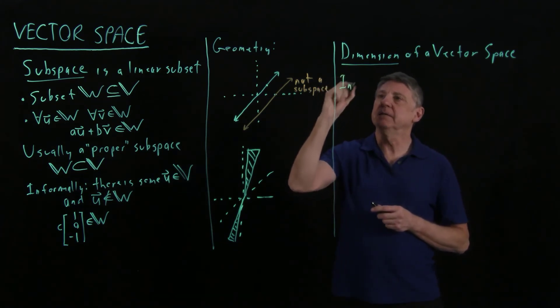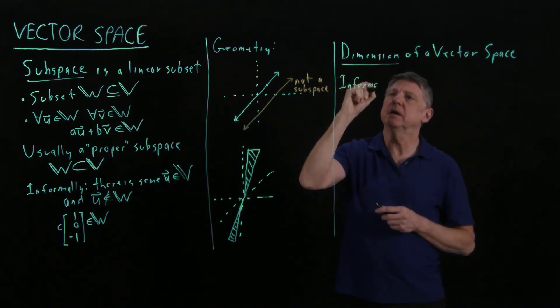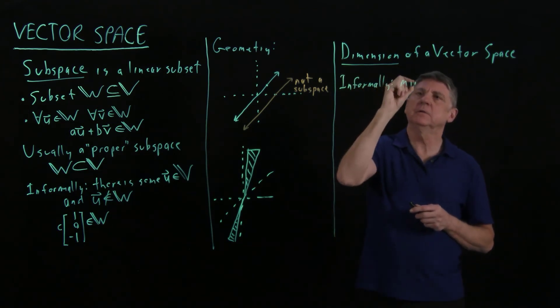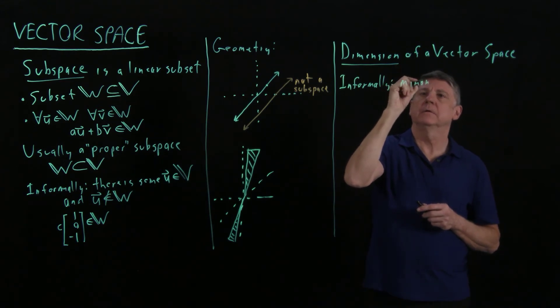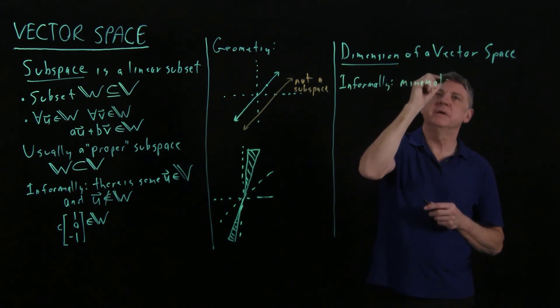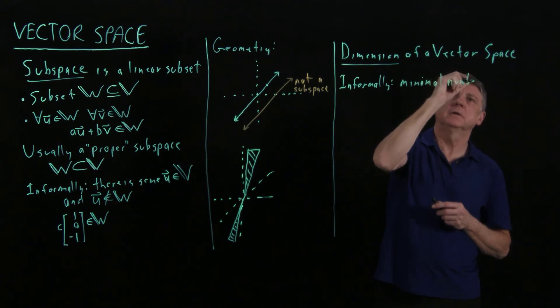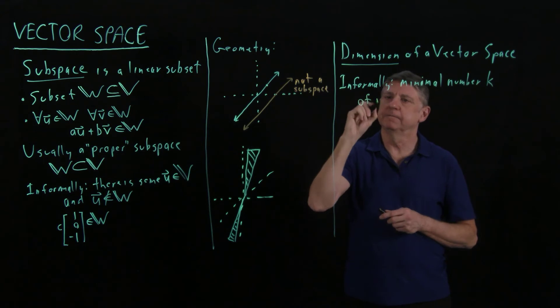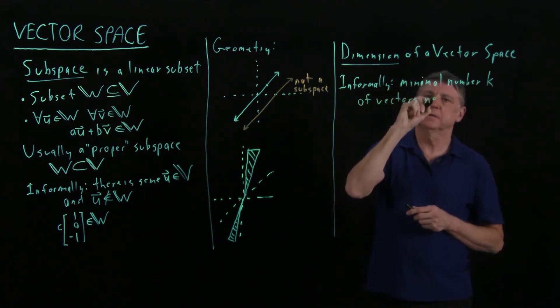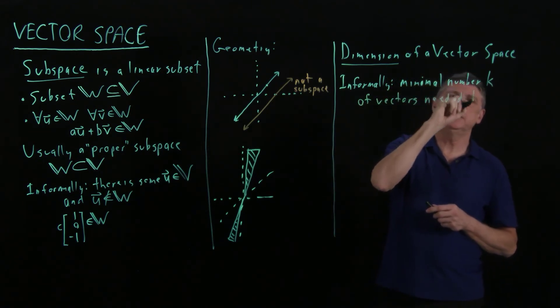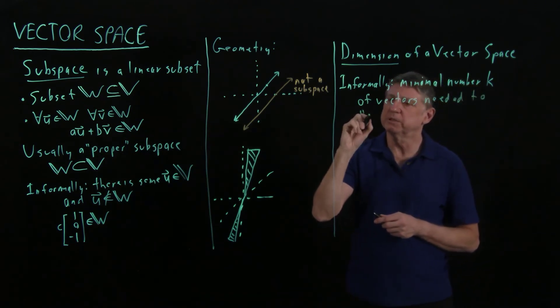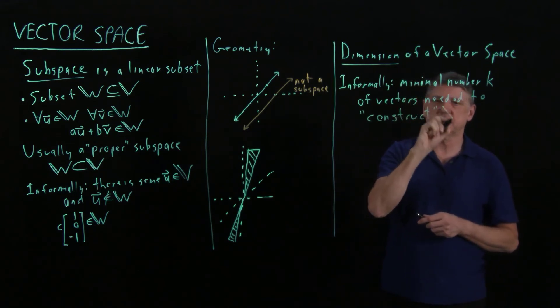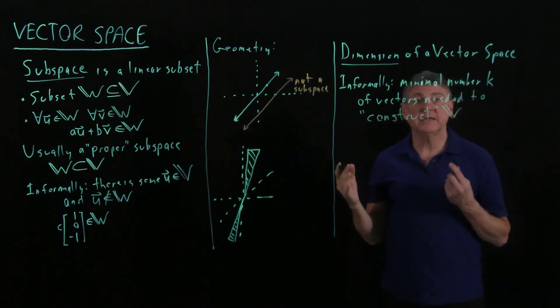And informally, in a later session we'll get formal, but informally, it's the minimal, the minimal number k of vectors needed to, I'll put this in quotes because we don't really understand this word fully yet, needed to construct the vector space. So let's say let's take an example.